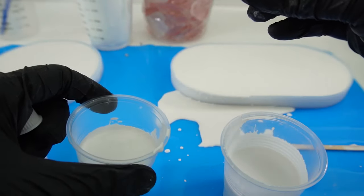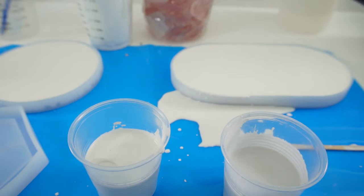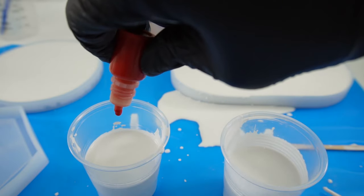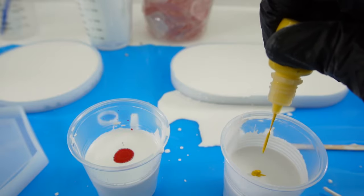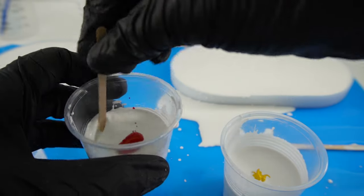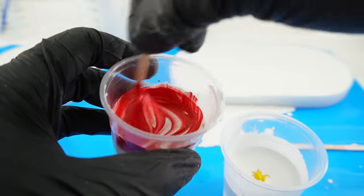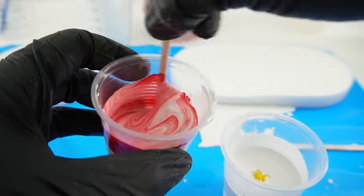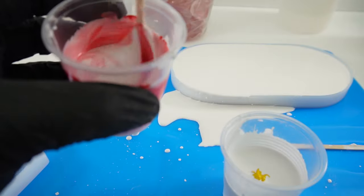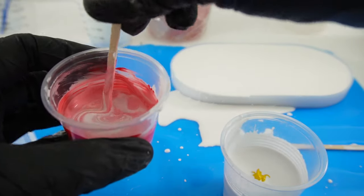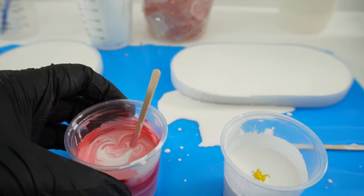So for the next batch, I made another 100 mils. I'm going to add the colors. Give it a good stir. I kind of want a marble-y effect so I'm not going to stir it too much.